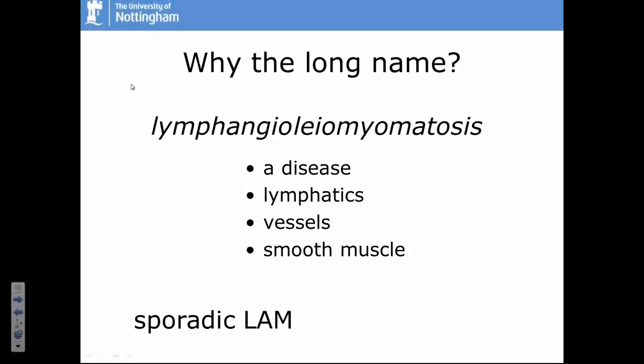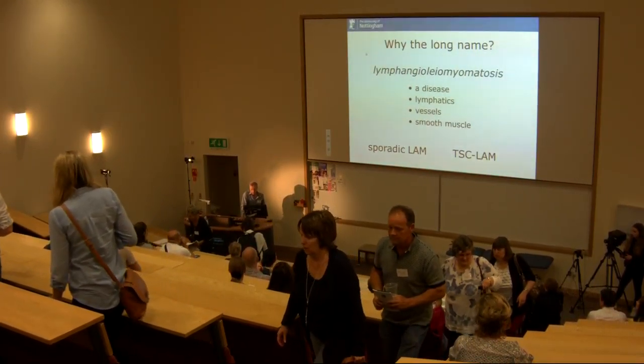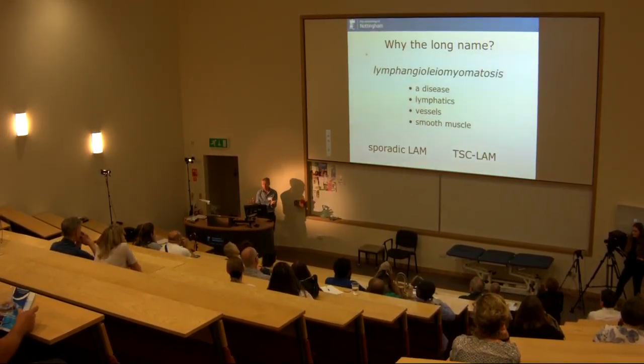There are two forms of LAM. There's sporadic LAM, which is the form most people at the LAM Centre tend to have, where LAM occurs on its own as an isolated disease. LAM is also quite common in patients with another disease, tuberous sclerosis complex, or TSC — a genetic disease that affects multiple organs. There's a very high prevalence of LAM in women who have tuberous sclerosis, though most people with LAM have the sporadic form.